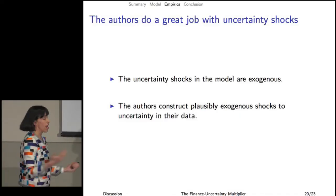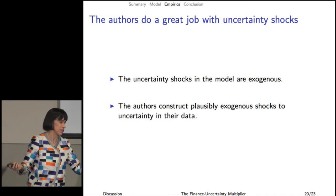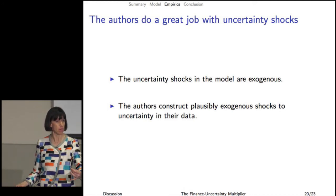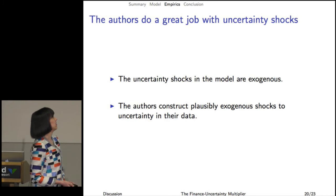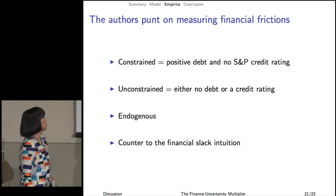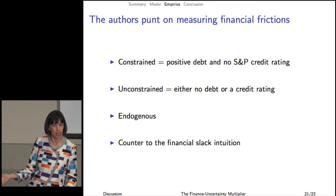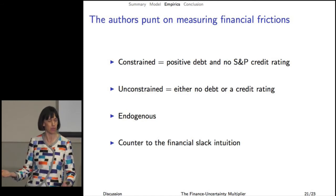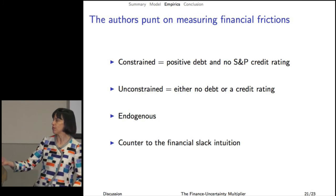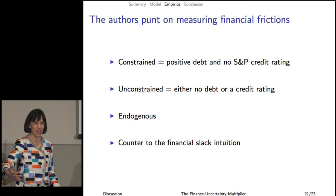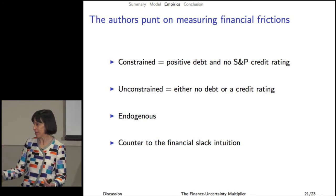Now on to the empirics. I was pretty unhappy with the uncertainty shocks. It's not a perfect instrument — no instrument in corporate finance is perfect — but on the scale of instruments it's pretty good, and it's very closely tied to the model. The uncertainty shocks in the model are exogenous, and so they're looking for exogenous variation in uncertainty in the data. But the authors punt on measuring financial frictions. Their main measure from the Rampini-Viswanathan paper defines constrained as having positive debt and no S&P rating, which is kind of endogenous and also doesn't make sense. What if these firms are just great bank customers and not financially constrained? Also, this measure has nothing to do with the financial slack intuition — if you're using a lot of debt you might actually be up against a constraint and not have a lot of financial slack.